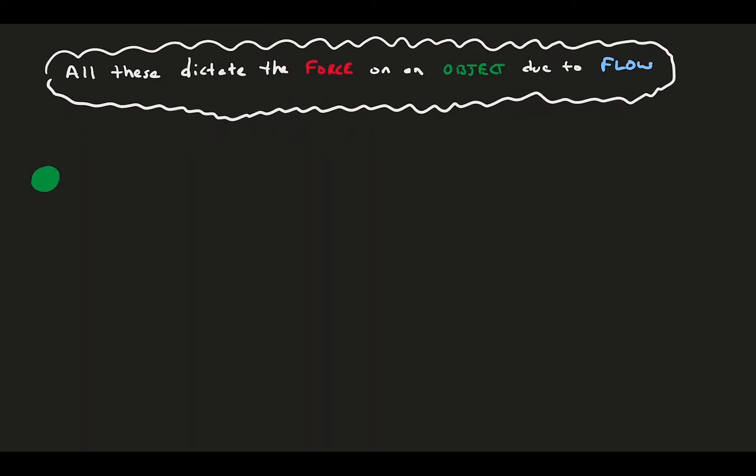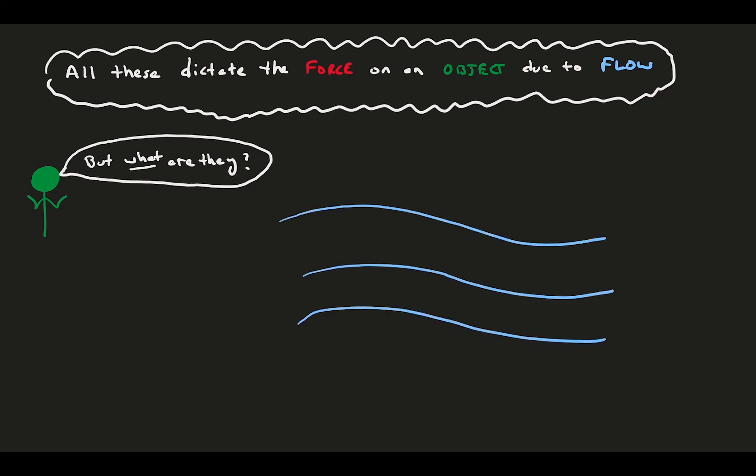So, here we will explore the definitions of each variable and what they are. Let's consider a sample flow, here represented by some parallel streamlines.